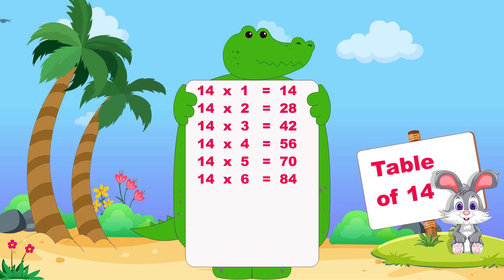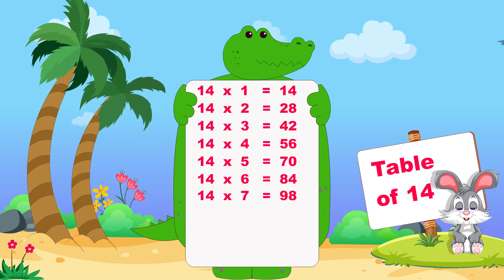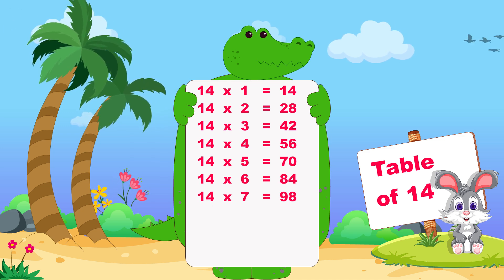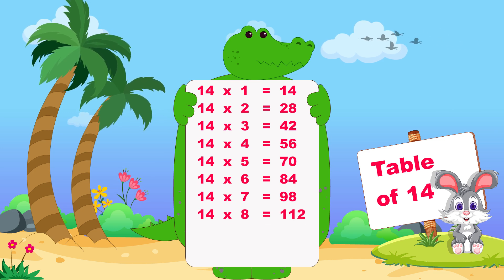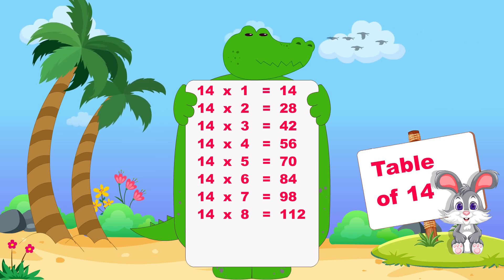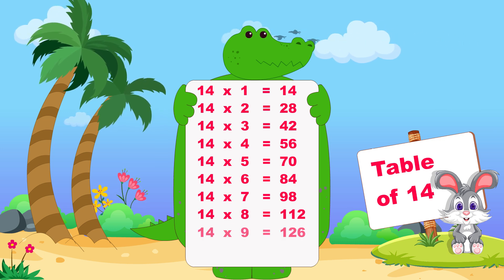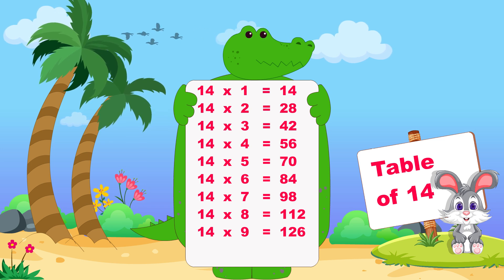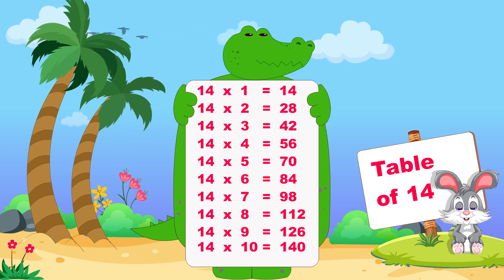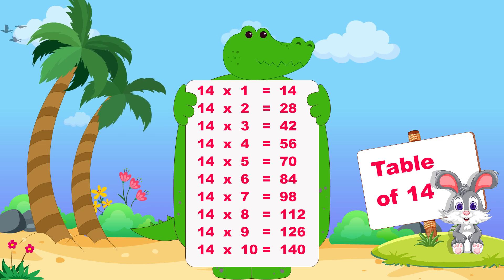Fourteen sixes are eighty-four, fourteen sevens are ninety-eight, fourteen eights are one hundred twelve, fourteen nines are one hundred twenty-six, fourteen tens are one hundred forty.